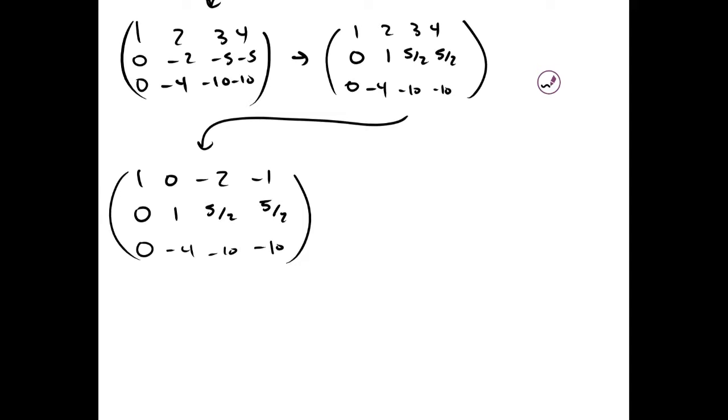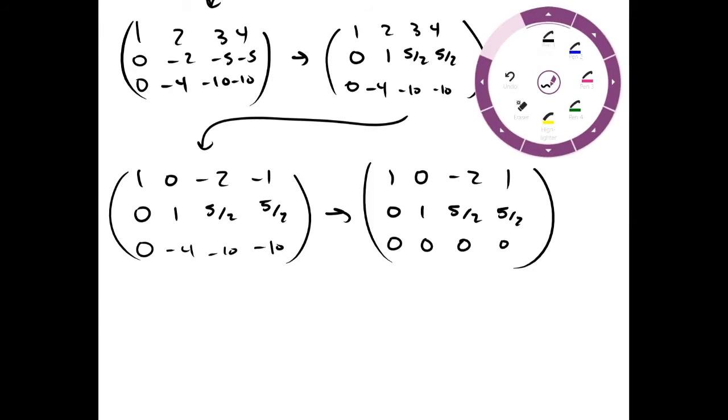Then I'm going to take R3 and add 4 of R2. So now we have it in reduced row echelon form.